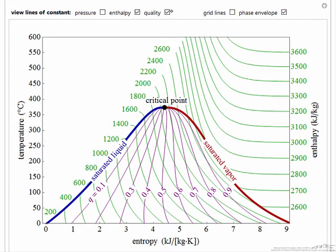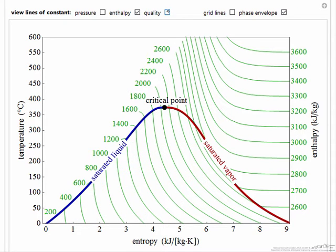The enthalpy, constant enthalpy lines then show how enthalpy changes with temperature, and of course on this diagram when we're changing temperature, we're also changing pressure. We're keeping enthalpy constant on these lines, and so in the two-phase region, we're having significant changes in pressure as we change the temperature.